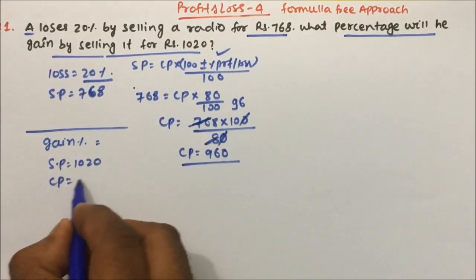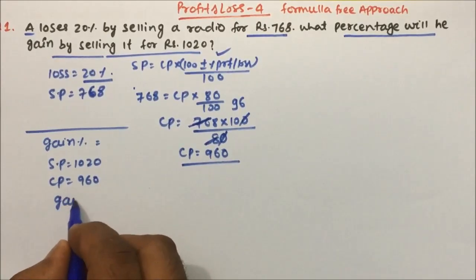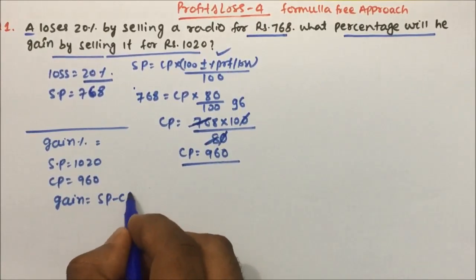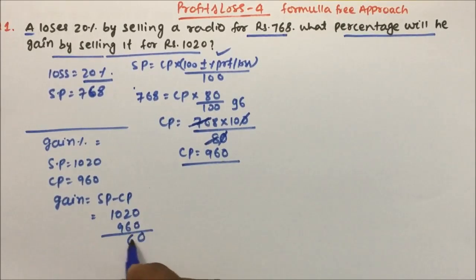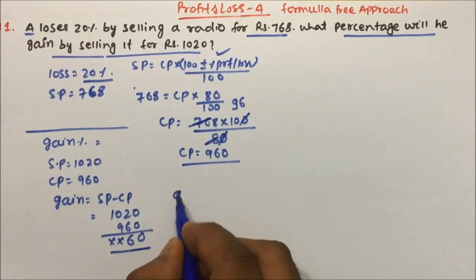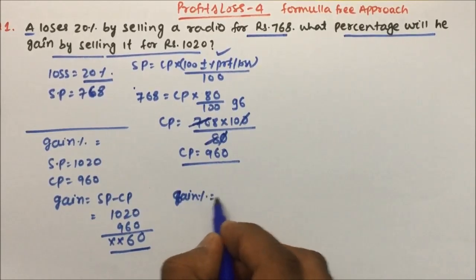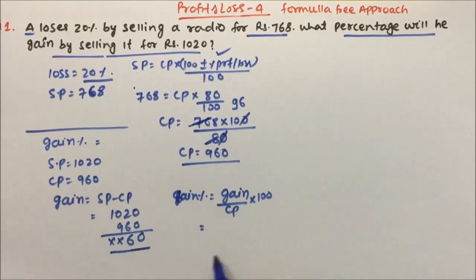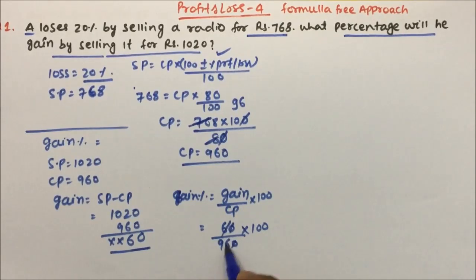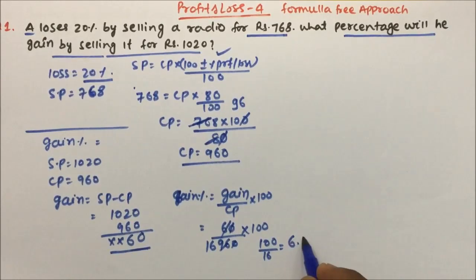Now we got the CP: 960 rupees. The gain (profit) will be SP minus CP, which is 1020 minus 960, giving 60 rupees. Gain percentage equals gain divided by cost price into 100. So 60 divided by 960 into 100. This simplifies to 100 by 16, which is approximately 6.67 percent.